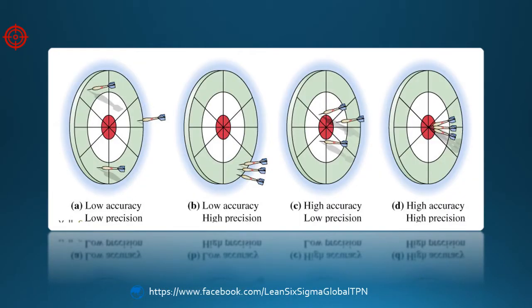Because precision is based on variation in the results, a measurement system may be precise but not necessarily on target.